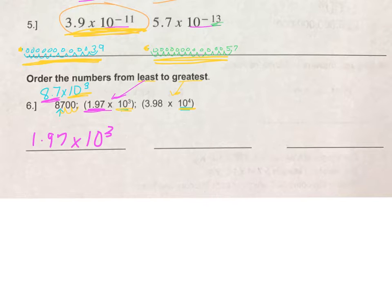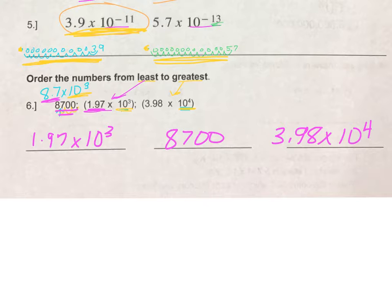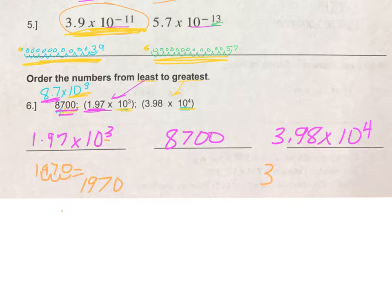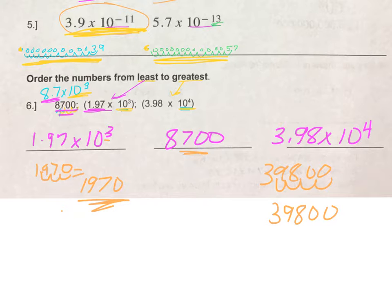Our next smallest number was 8,700 — I'm going to put the original value here. And our greatest number had the greatest power of 10. I also want to show that we could take the two numbers in scientific notation and put them into standard form just to be sure. So 1.97, move the decimal three places: 1, 2, 3 — that is 1,970. And the largest one: 1, 2, 3, 4 — this is 39,800. So you can see small, middle, and then the largest.